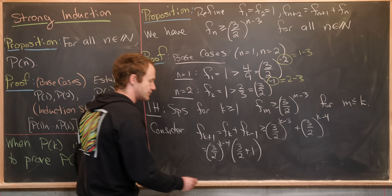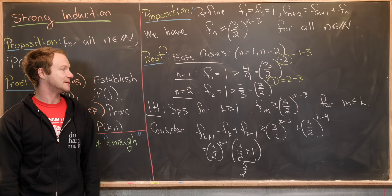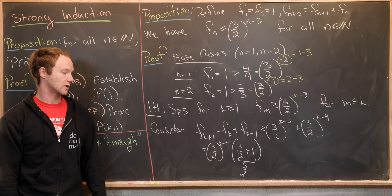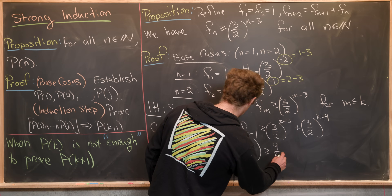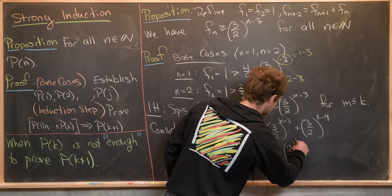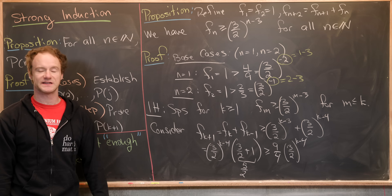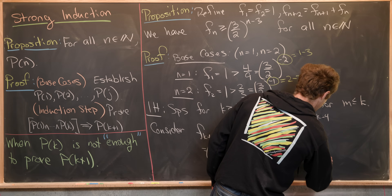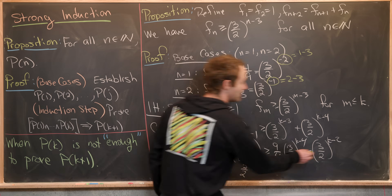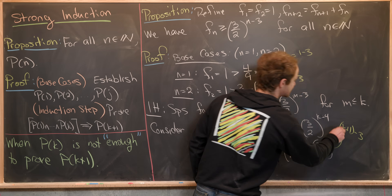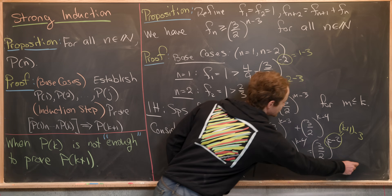Notice that 3/2 + 1 = 5/2, and 5/2 > 9/4. So we get ≥ (9/4) · (3/2)^{k-4}. Since 9/4 = (3/2)², multiplying gives (3/2)^{k-2} = (3/2)^{(k+1)-3}, which is exactly what we needed to finish the proof.